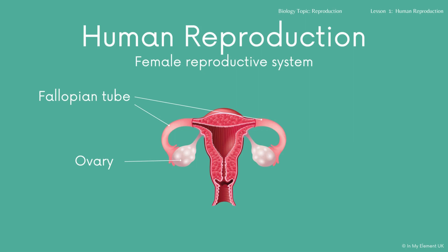The ovary — that white sack in the diagram — is where the eggs are produced. These eggs are also called the ovum. They're produced and stored in there and then released, usually on a monthly cycle.